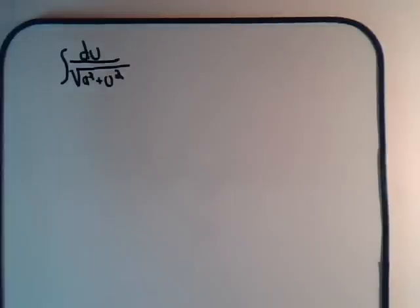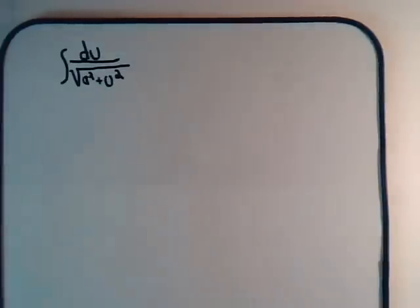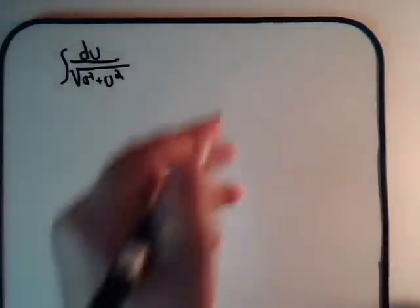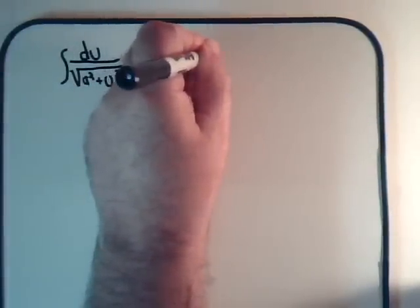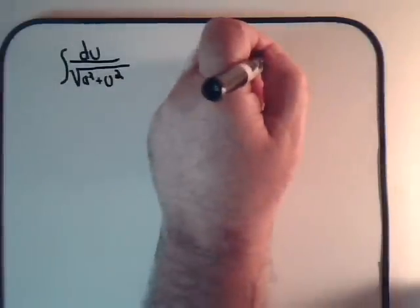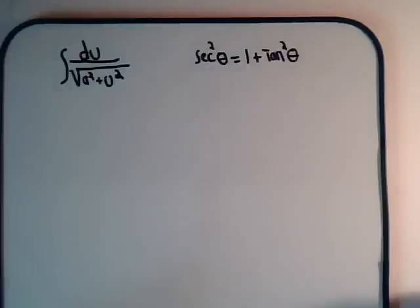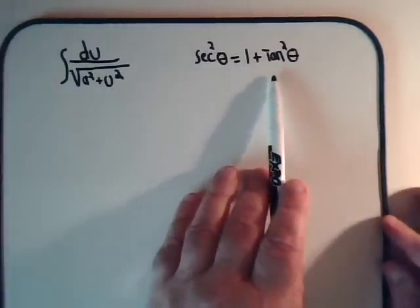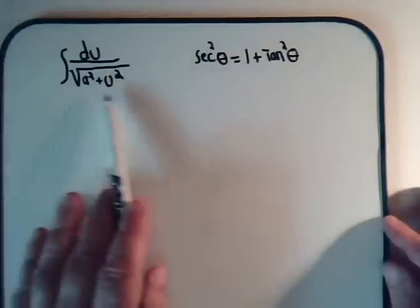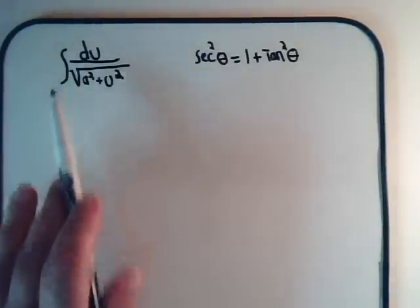If we were just looking at trig substitutions, we would realize we have a constant squared plus a variable squared. Hopefully that reminds you of a trig identity where the secant squared of theta equals 1 plus tangent squared of theta. Here we have a constant plus a variable squared — same form. If we were just going to work with trig substitutions, this is what we would use to try to solve this integral.